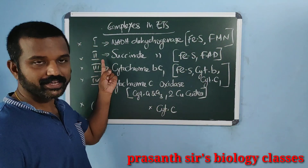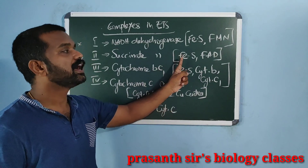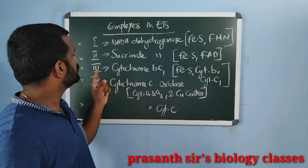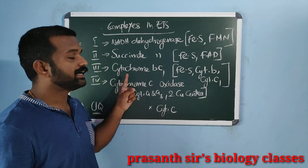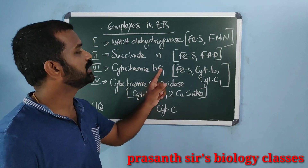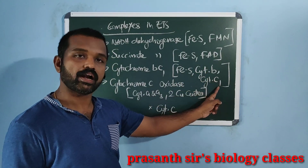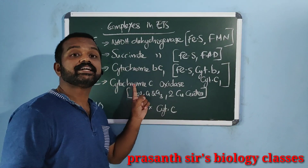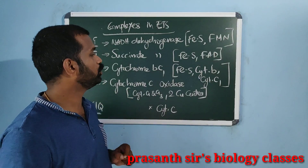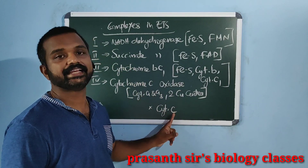Complex 2 is the succinate dehydrogenase enzyme complex, and its components include iron-sulfur containing protein and FAD, flavin adenine dinucleotide. Complex 3 is known as cytochrome B-C1 complex, and its components include iron-sulfur protein, cytochrome B, and cytochrome C1. Complex 4 is the cytochrome C oxidase enzyme complex, and its components include cytochrome A, cytochrome A3, and two copper centers.